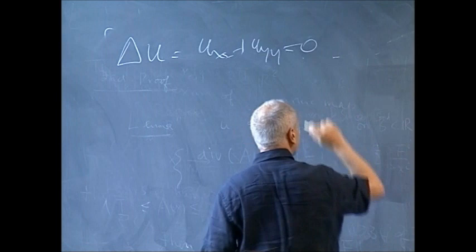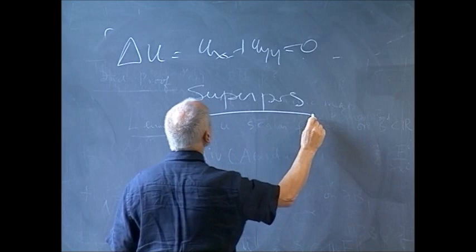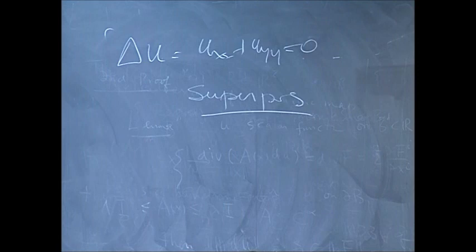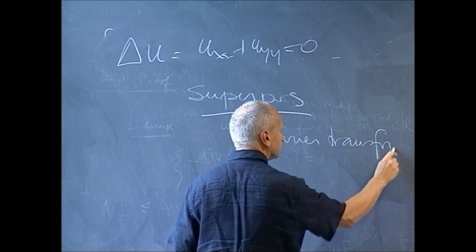To explain this, one can use three different techniques. The first is superposition: the Laplacian is a linear equation, so by superposition you can prove the regularity. This is done, for instance, via Fourier transform or potential theory.